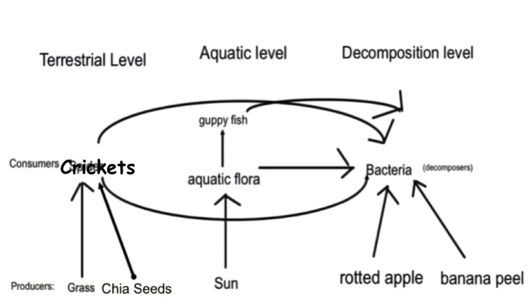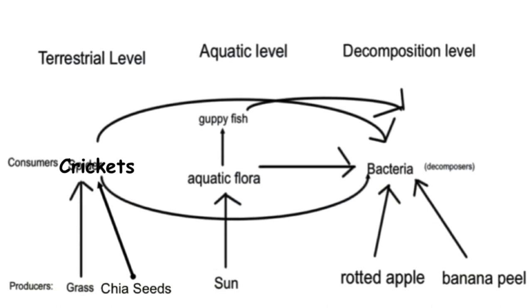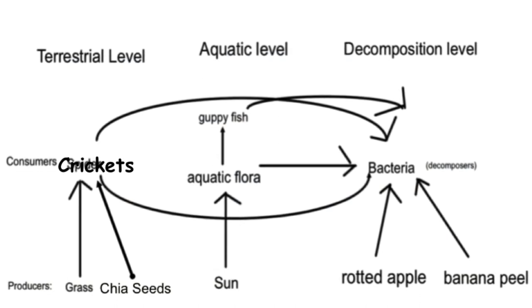Then there's a decomposition level with worms and soil — you usually have paper there if you are into that worm bedding thing — and an aquatic level, which is usually fish. Sometimes you might include plants too, if you want food for them.